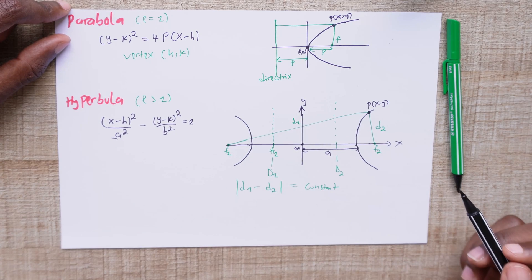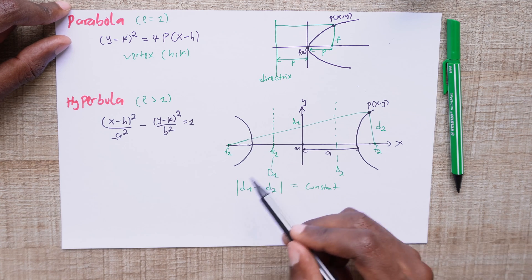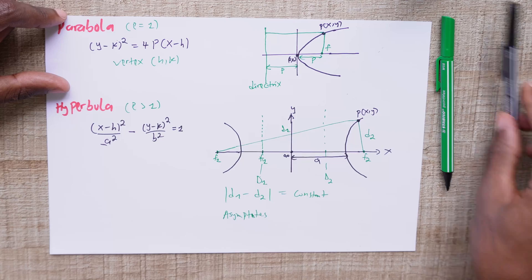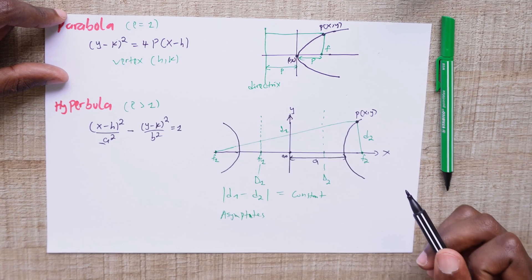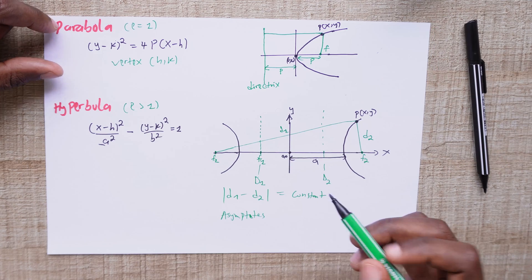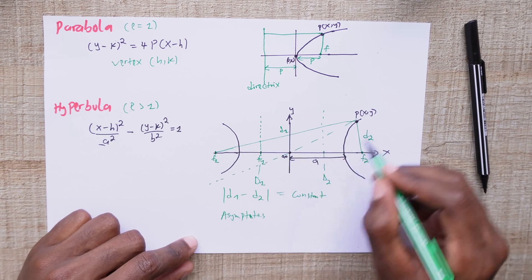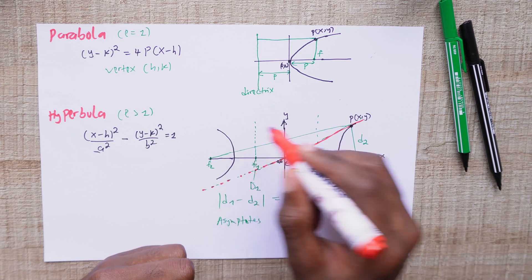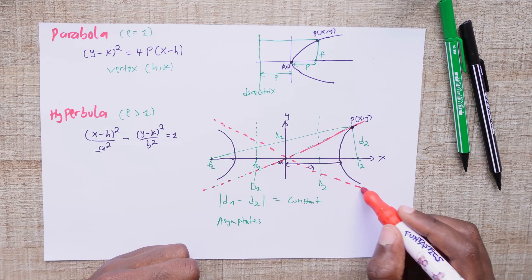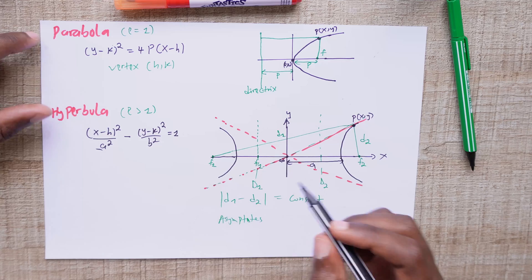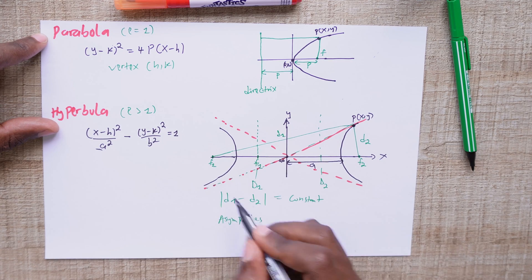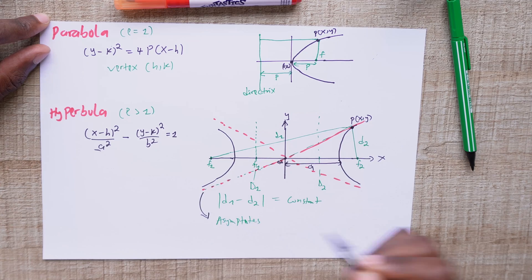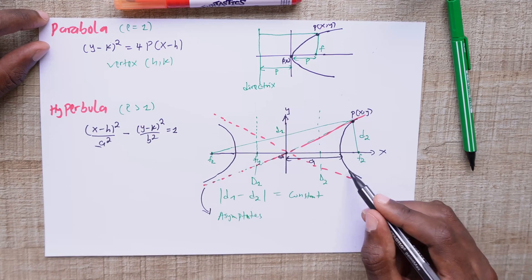What's really particular about the hyperbola is that we can define two other lines known as asymptotes. These two lines are tangent to the hyperbola at infinity — in other words, they would never touch the hyperbola; they get very, very close but they will never touch it. These lines in mathematics are known as asymptotes — they are tangent to the curve at infinity.